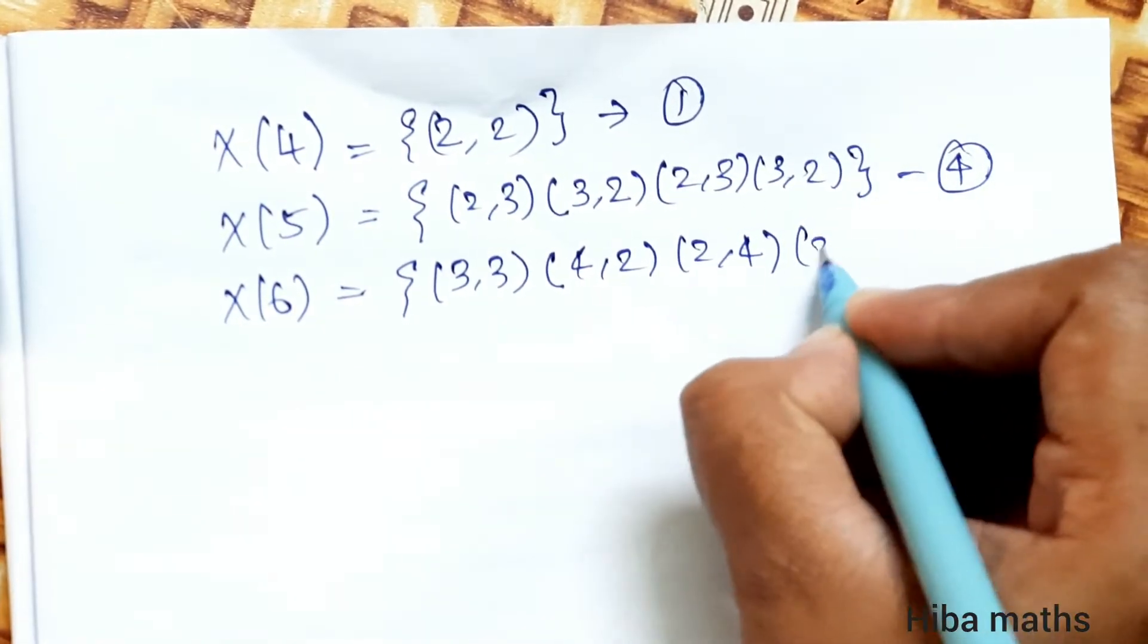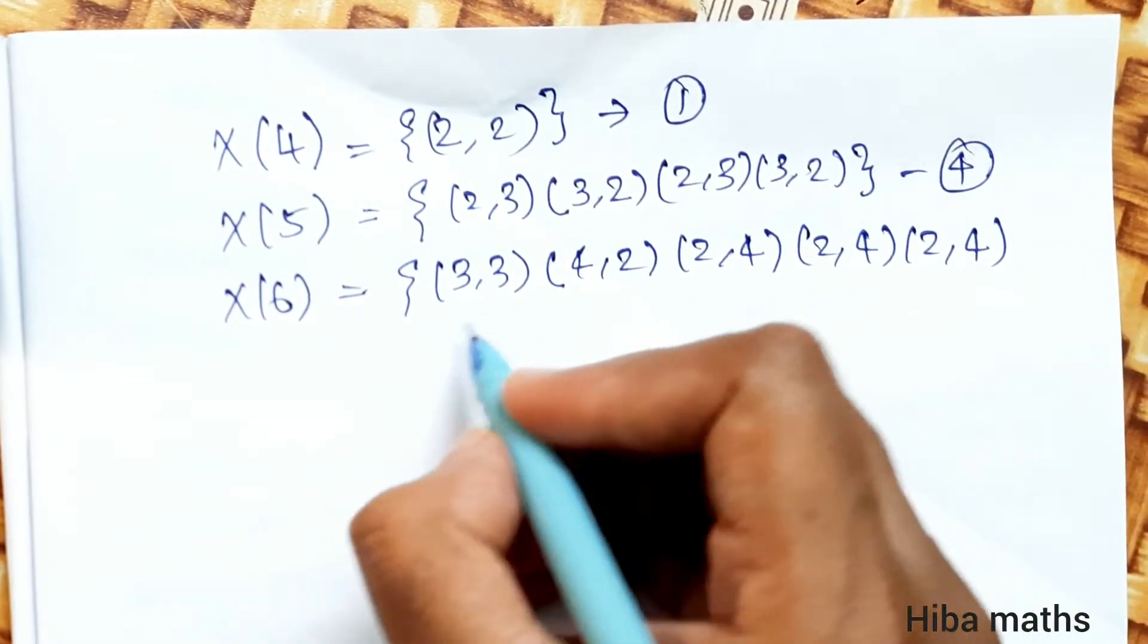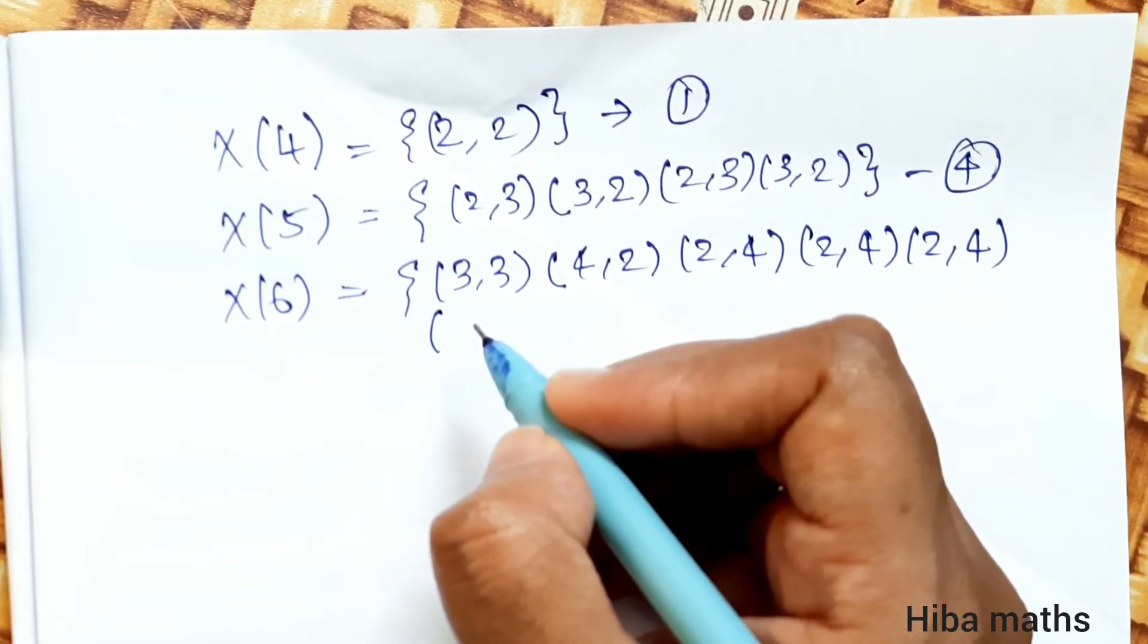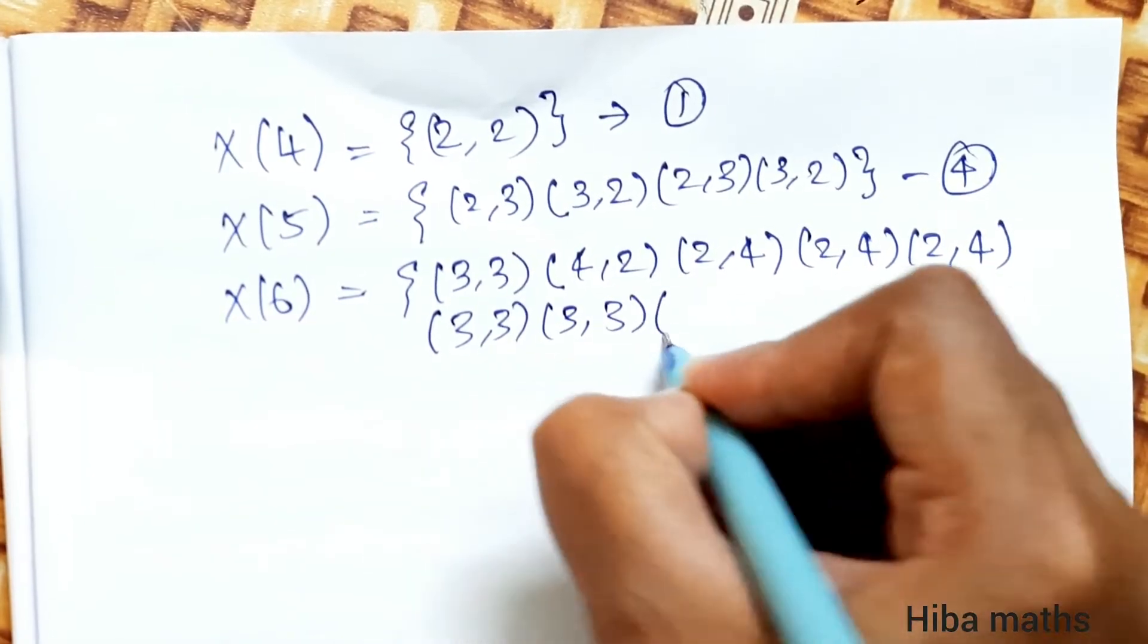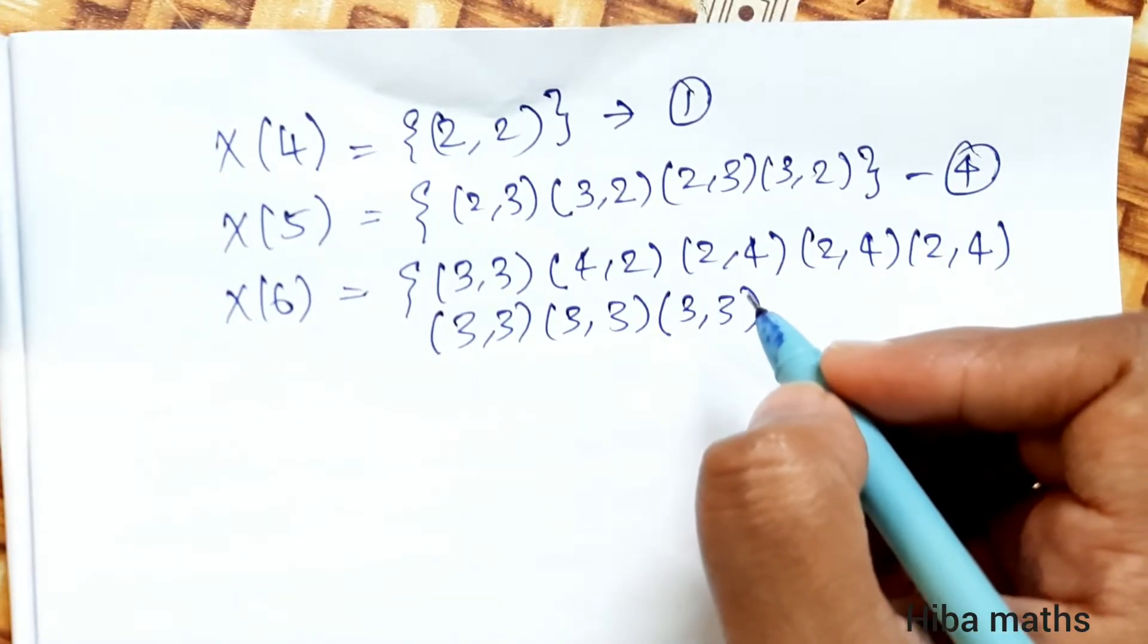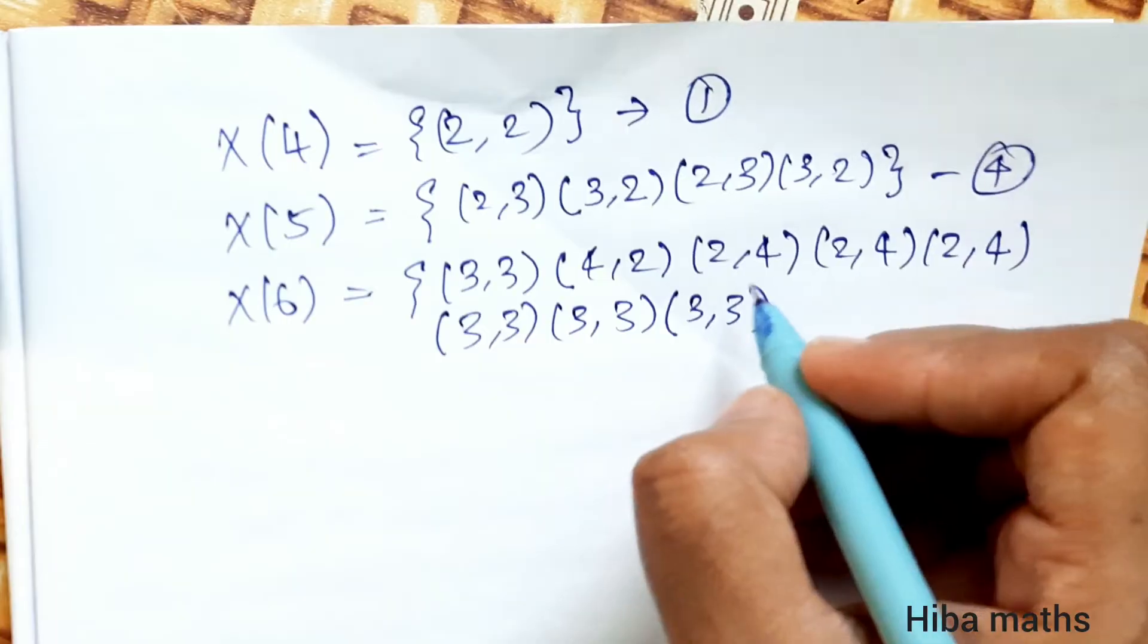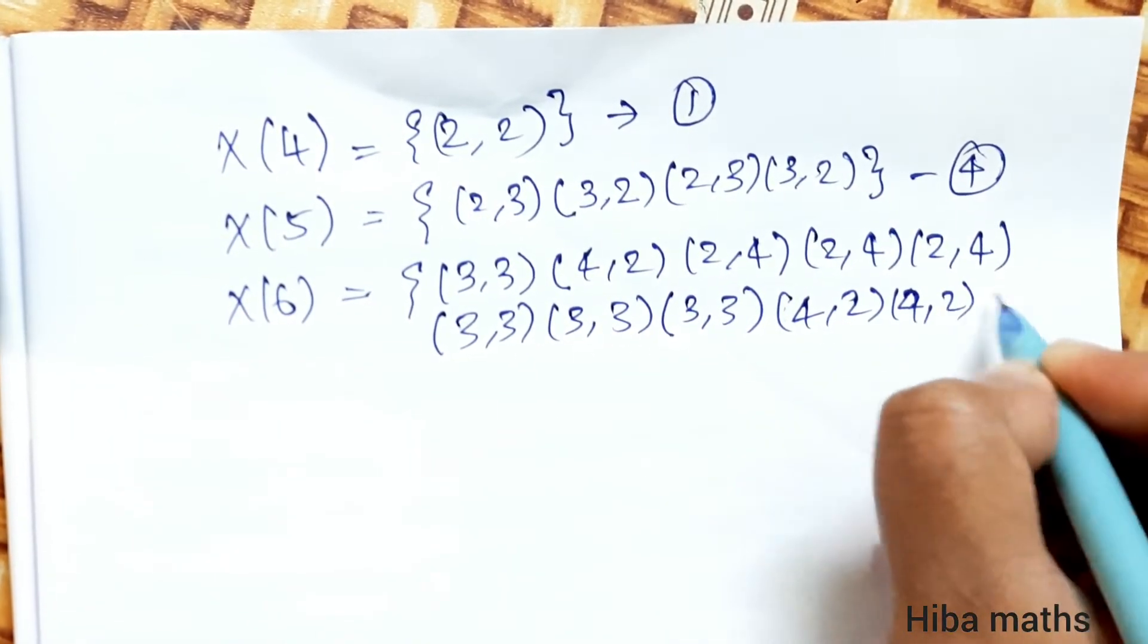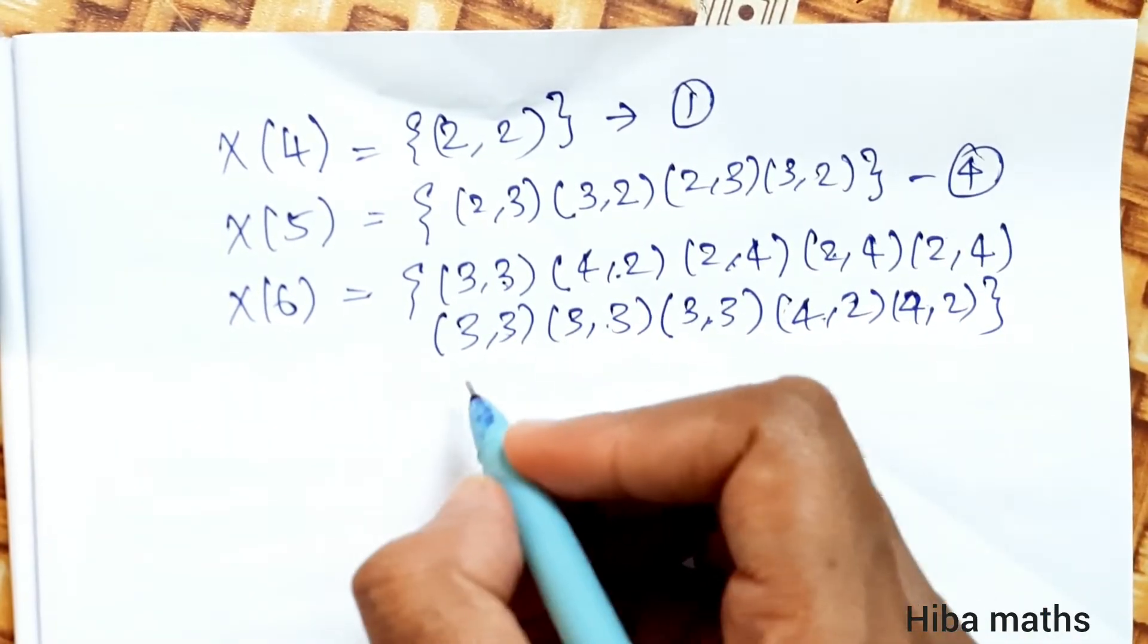For X of 6, we count: 3,3 appears 4 times, 4,2 appears 3 times, and 2,4 appears 3 times. So total is 10 outcomes.